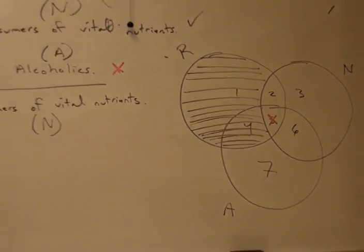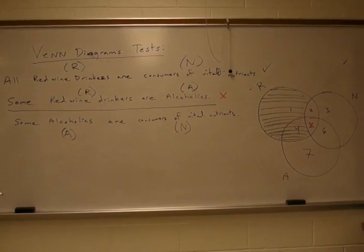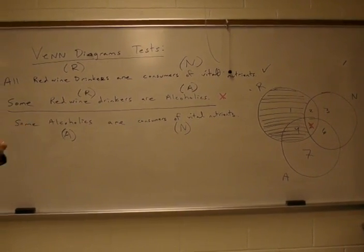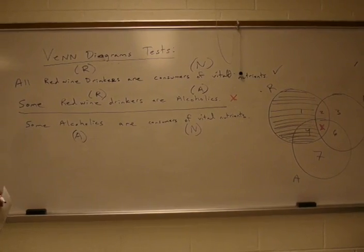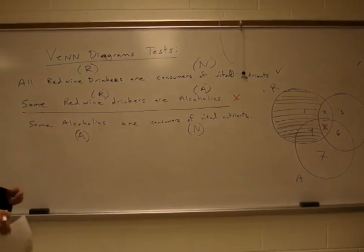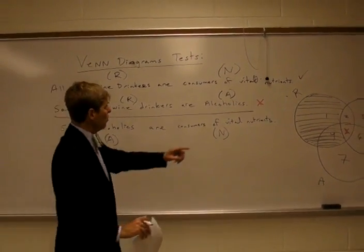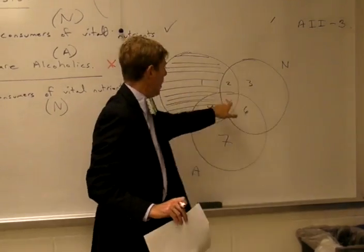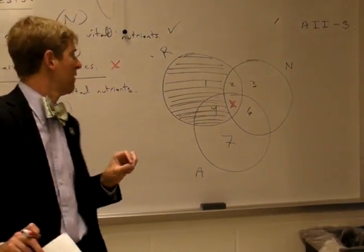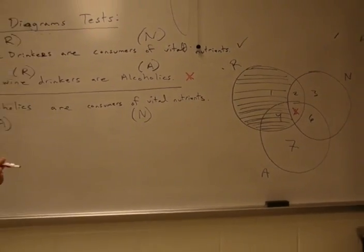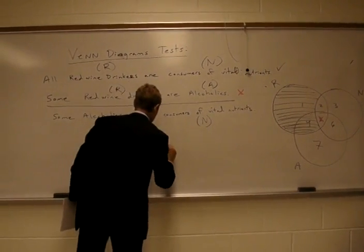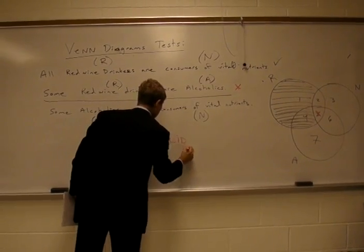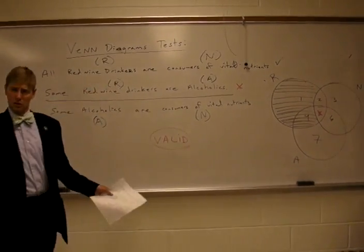Now, we can read our diagram for validity. Therefore, can we conclude that some alcoholics are consumers of vital nutrients? The answer is absolutely. Because here's our some alcoholic, also happens to be a member of N, the class of those who are consumers of vital nutrients. This one's valid.